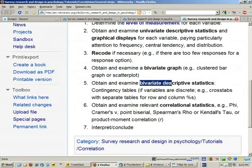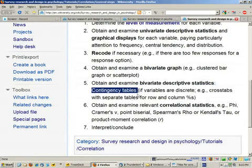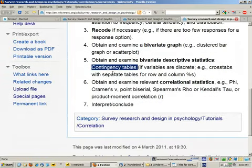And if we're dealing with non-parametric data, we can get bivariate descriptive statistics, in particular contingency tables which provide the frequencies for each level of variable.